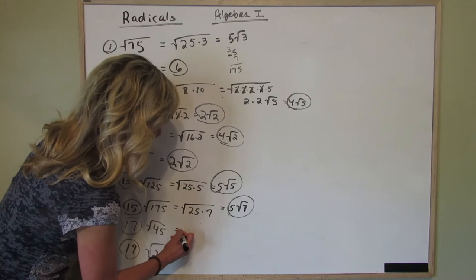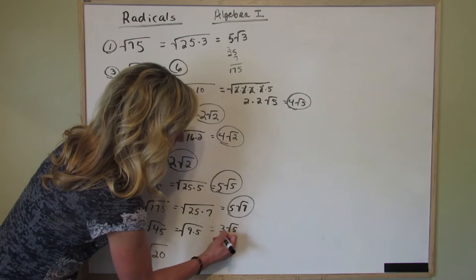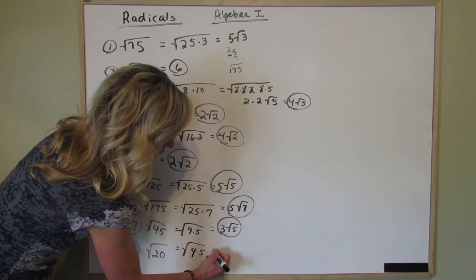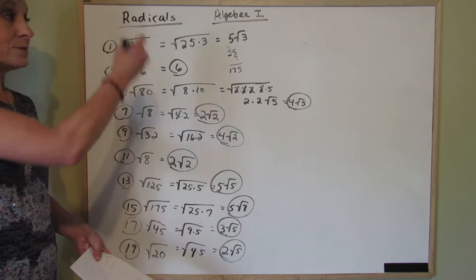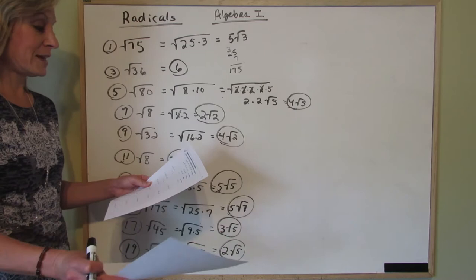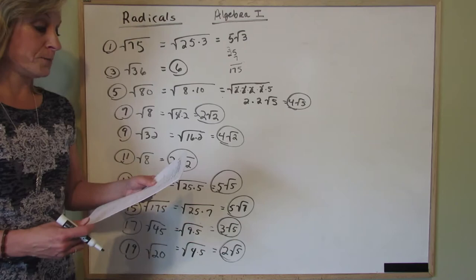Number 17, the square root of 45. Most of you would recognize that as 9 times 5. The square root of 9 is 3, left with a 5 underneath. 3 square roots of 5. And then finally number 19, the square root of 20. Most of you recognize that as 4 times 5, and the square root of 4 is 2, and you're left with a square root of 5. And those are all of the odds on the first page. So part of your homework for today will be to do the evens on the first page. And I'm going to move to the second page of the packet when we start adding and subtracting radical expressions.